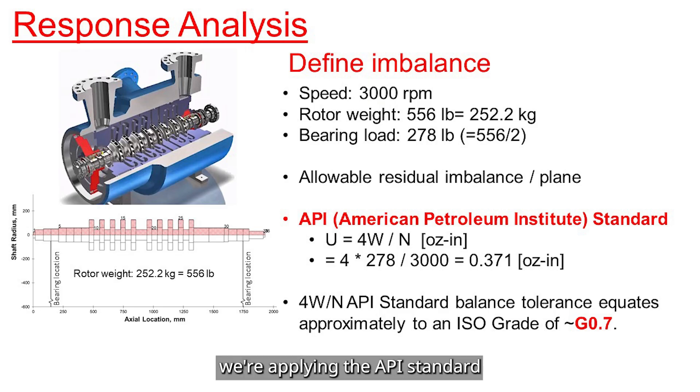In the first case, we're applying the API standard. And API stands for American Petroleum Institute. Their imbalance spec is four times the bearing load divided by the rotor speed. This spec is commonly used for high-speed, high-pressure machines, like compressors and turbines.